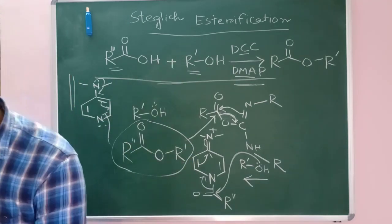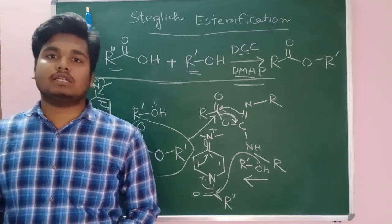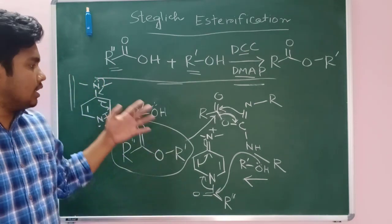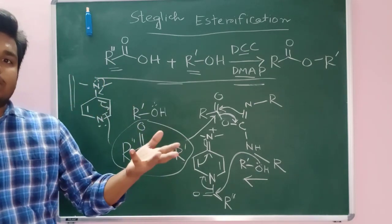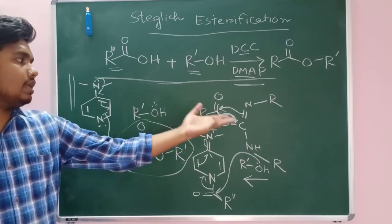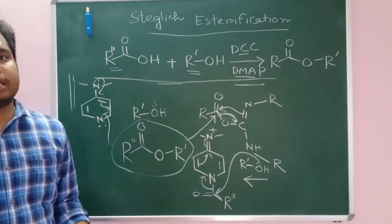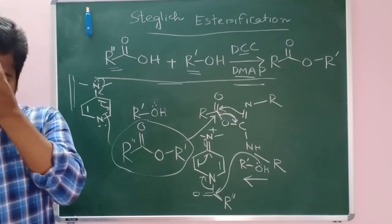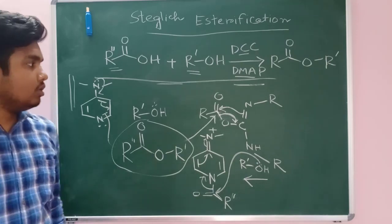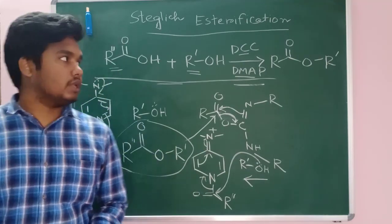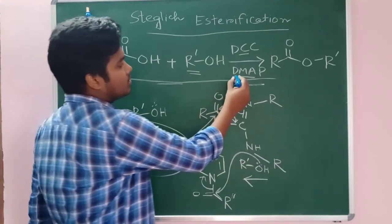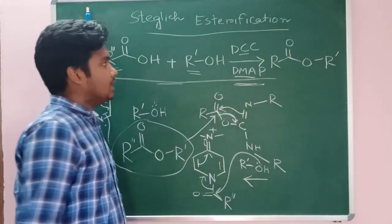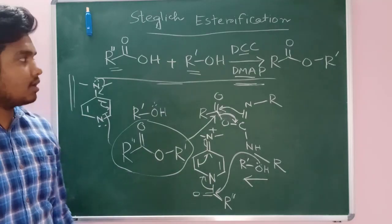From these two starting materials. So here you can see this DMAP acts as a nucleophilic catalyst. It can drive the reaction to the esterification site. Otherwise you can get this side product. That time the yield of the reaction will be low and you will end up getting mixture of products. So that's why the role of DMAP is very efficient in this reaction and I have shown how DCC can act.